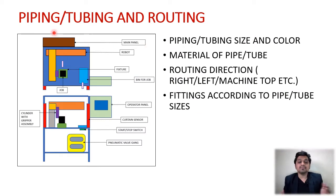Let's move on to the fifth parameter: piping or tubing and routing. This is also a very important factor. In case of pneumatics you have pneumatic tubes, and in case of hydraulics you can have copper pipes or steel pipes according to your system.